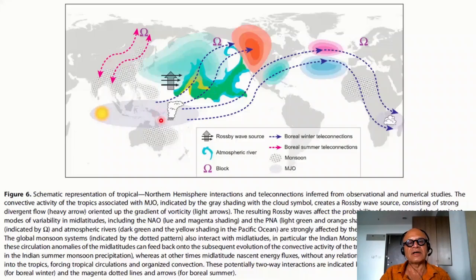And, of course, the atmospheric river phenomenon shown here is very critical for snow and rainfall that is brought to the West Coast of the U.S. up into Northwestern Canada as well. And you have the boreal winter teleconnections shown in these blue arrows and boreal summer teleconnections shown with these magenta arrows. So, this is kind of a brief summary.